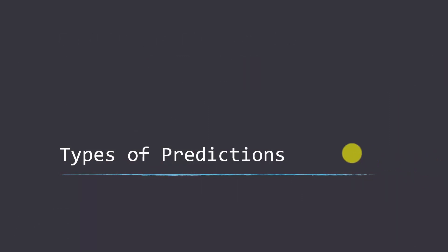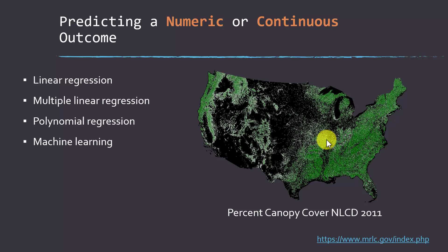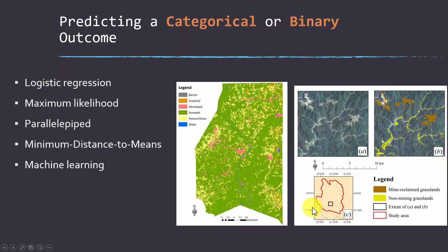Let's look at the broad types of predictions we can make using machine learning. We can predict things that are numeric or continuous — interval and ratio type data — which can be accomplished using regression, including multiple regression or polynomial regression for non-linear relationships. Machine learning can also predict continuous variables. For example, the Multi-Resolution Land Characteristics Consortium, which makes the National Land Cover Database, has predicted or estimated percent canopy cover on a pixel-by-pixel basis for all forested areas in the country. That's a continuous measurement, and this product was produced specifically with the random forest algorithm.